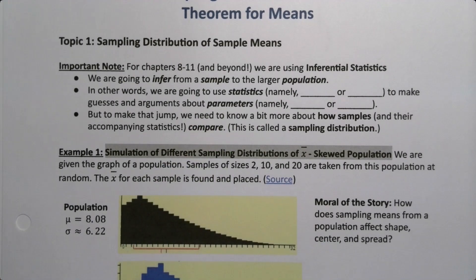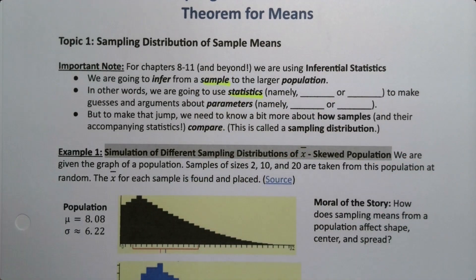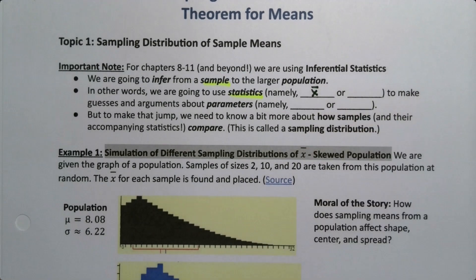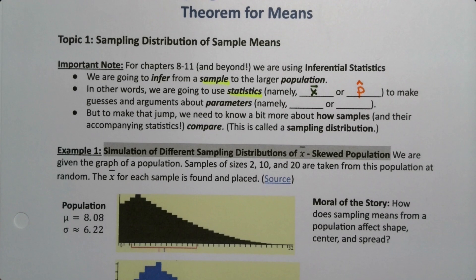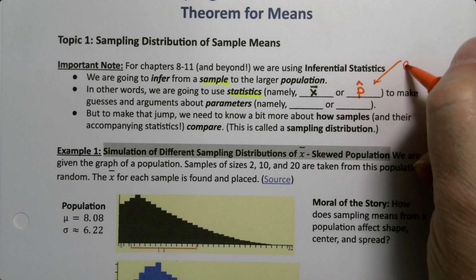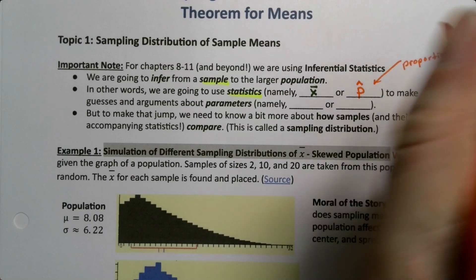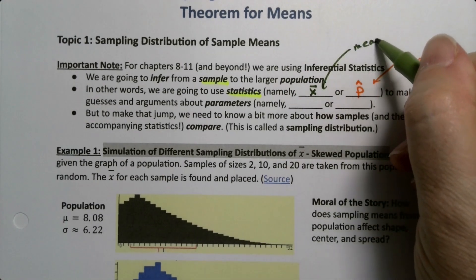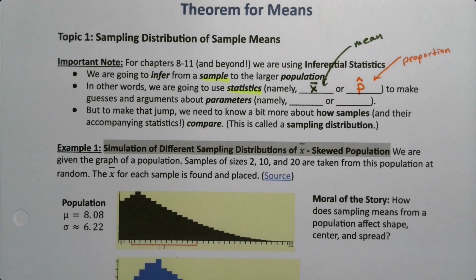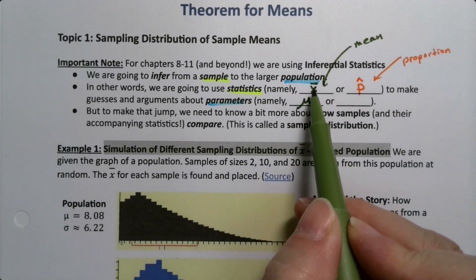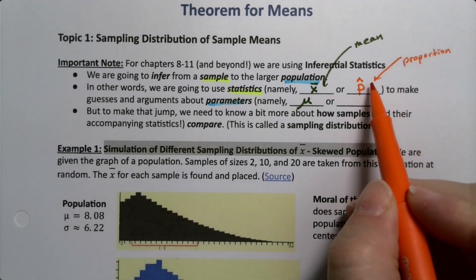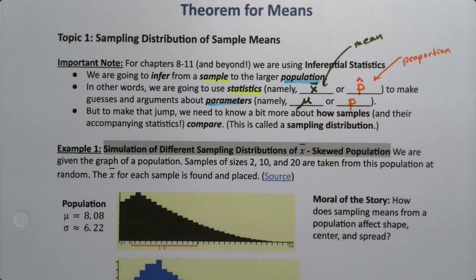Remember, statistics go with sample. We've learned one of them already, back in chapter 3. It's called x-bar, which is the sample mean. And then we're going to learn a new one in section 8.2, which is p-hat. That's a sample proportion. They tie to different parameter values because the parameter goes with the population. So x-bar ties to mu — that's the population mean — and the sample proportion p-hat ties to the population proportion, which is just p.